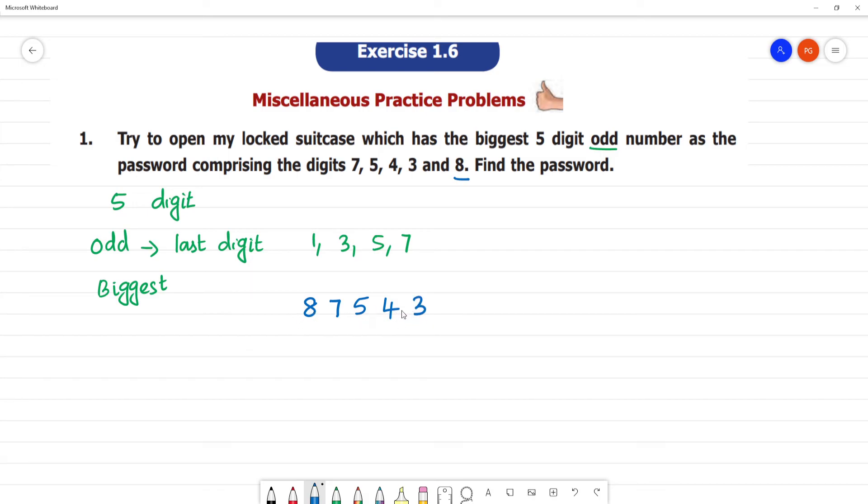87543. The last digit is 3, so this is an odd number. So the password for the suitcase is 87543.